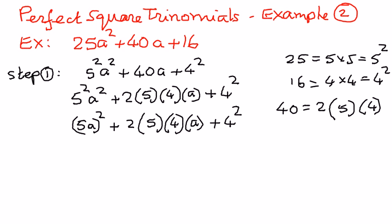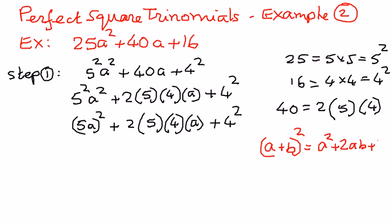Now, we know that if we have a binomial raised to the power of 2, if I have a plus b raised to the power of 2, I can write this as a squared plus 2ab plus b squared. Right now I have this form, and if I have it in this form, I can reduce it to a square of a binomial.